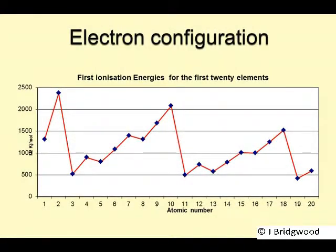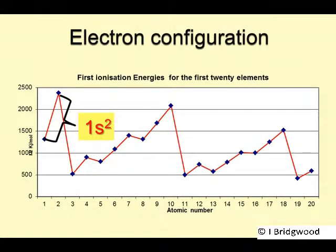Finally, electron configuration. Make sure you have a periodic table for this. The various blocks in the periodic table are known as S, P, and D. The periods in the periodic table — the rows — start with the first period from hydrogen to helium. The second period starts at lithium, and the third period starts at sodium. You can count along the boxes to get the electron configurations of your elements. For example, from hydrogen to helium: 1S2.